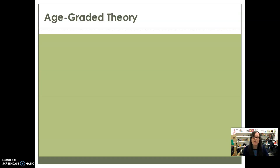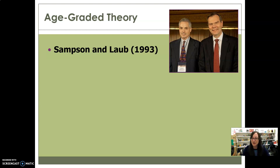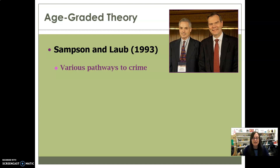Age-graded theory is a specific theory within the life course domain, developed by Sampson and Laub in 1993. They noted that while various pathways to crime had been well researched, they wanted to know about pathways back to conformity. If we agree that there are various pathways for people to end up in a criminal lifestyle, then there have to be various ways to get out of it.